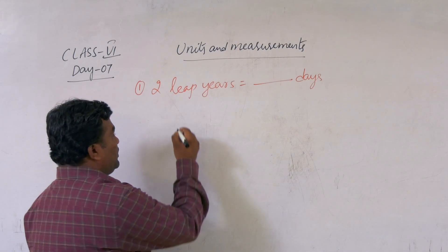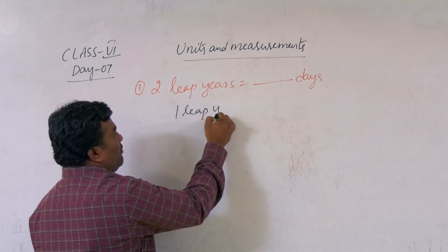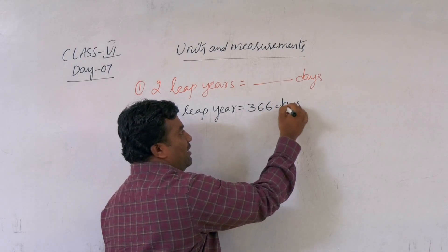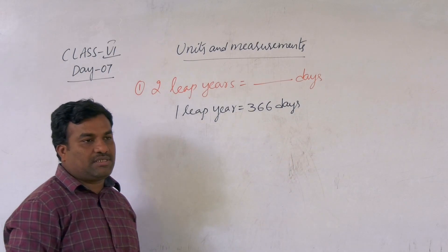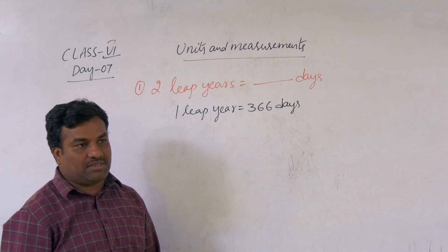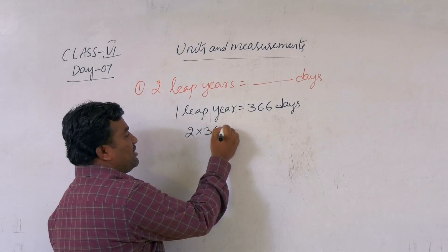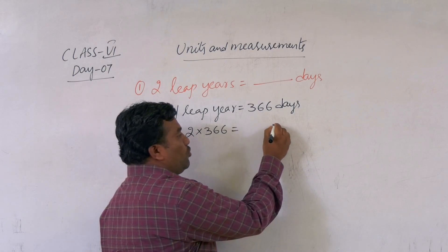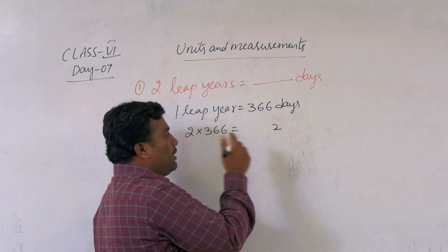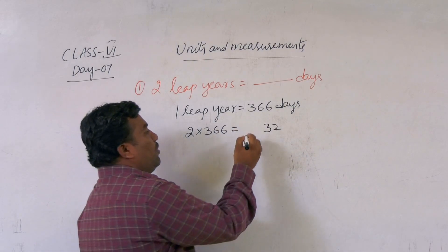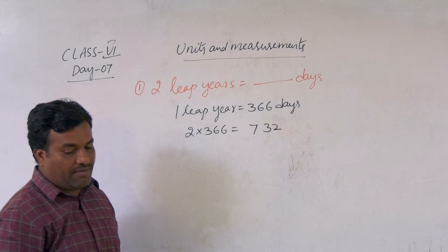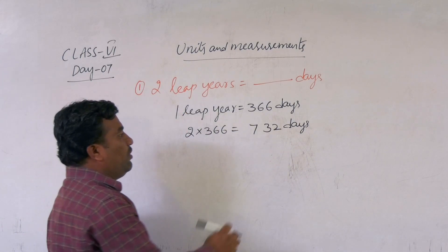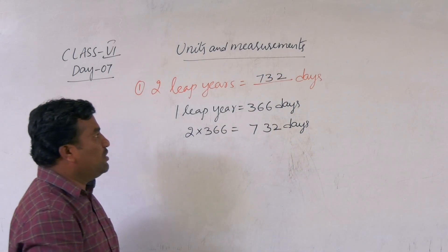One leap year equals 366 days. They are asking two leap years, which means two into 366. Multiplying: 2 × 366 equals 732 days. So two leap years equal to 732 days.